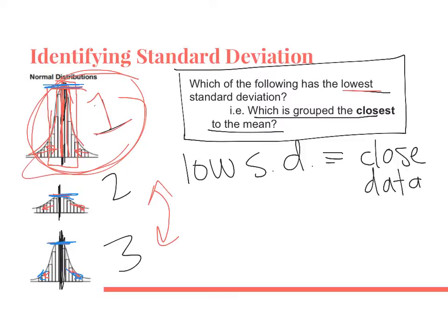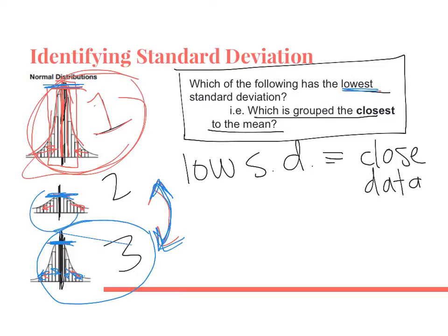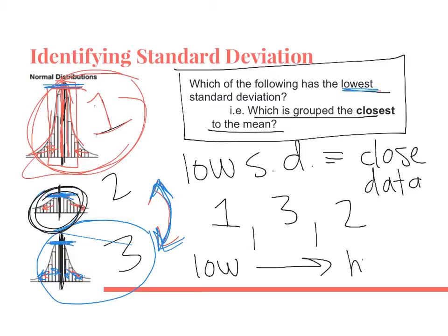Now, which of two or three has the lowest standard deviation? If you answered three, you would be correct. The height for number three is much taller than number two, so the data is closer to the mean. Number two would have the highest standard deviation. So ranking one through three from low to high standard deviation: number one, number three, number two.